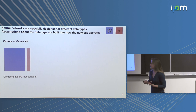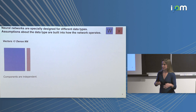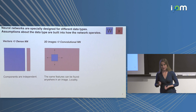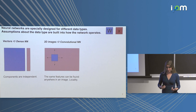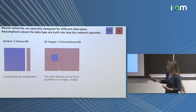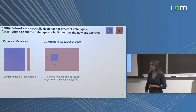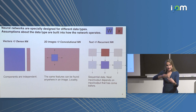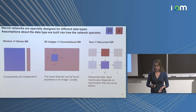For a dense network, inputs are vectors, and dense networks are built with the assumption that worst case your components are completely independent. For 2D images, convolutional neural networks assume we can identify the same features in any part of the image — there's also a notion of locality. For text or sound, recurrent neural networks assume some sort of sequence where the next part of the data depends heavily on what came before.